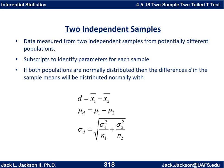We'll use subscripts to identify the parameters for each sample. X-bar sub one is the sample mean for the first sample, x-bar sub two for the second sample. Corresponding population means are mu one and mu two, and corresponding variances are sigma one squared and sigma two squared and so forth.